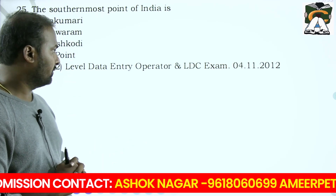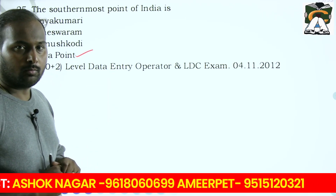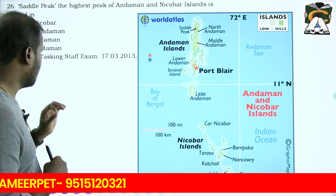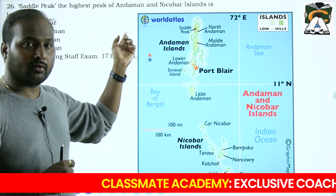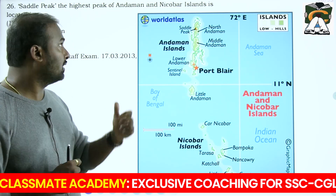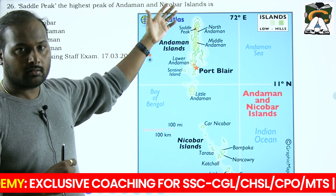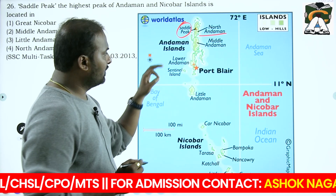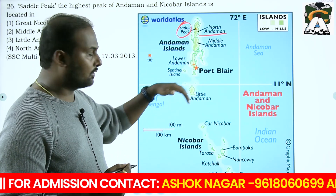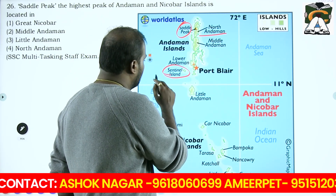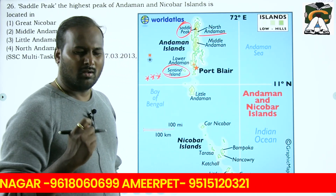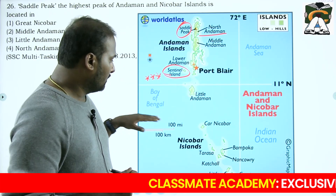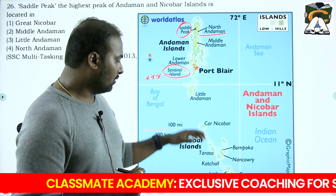The southernmost point of India is Indira Point in the Andaman and Nicobar Islands - specifically in Great Nicobar. Saddle Peak is the highest peak of the Andaman and Nicobar Islands, located in North Andaman. Also important: Port Blair is in South Andaman, the Sentinelese tribe lives on Sentinel Island - they are aboriginal and have not yet had contact with modern civilization. Little Andaman, Duncan Pass, 10-degree Channel, and the Nicobar Islands follow in order.